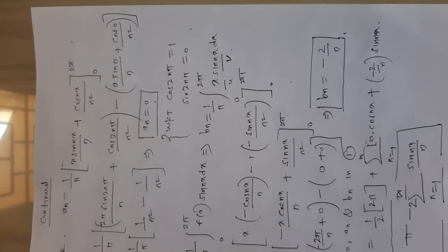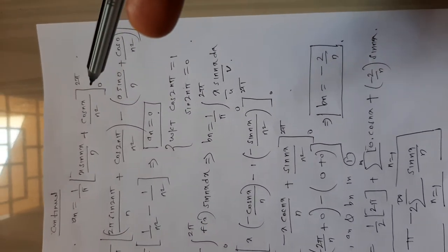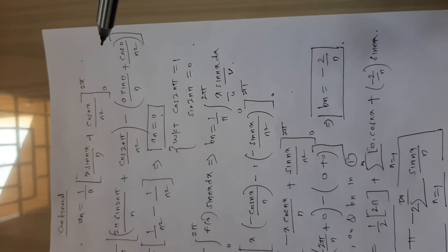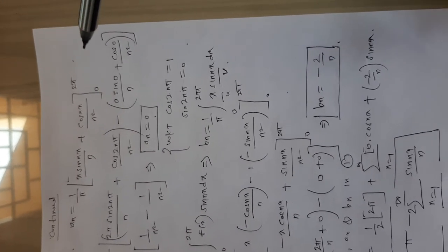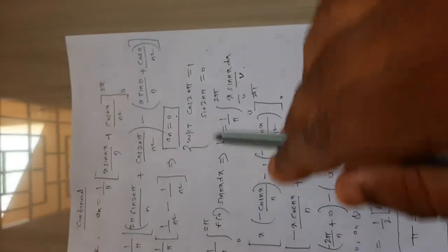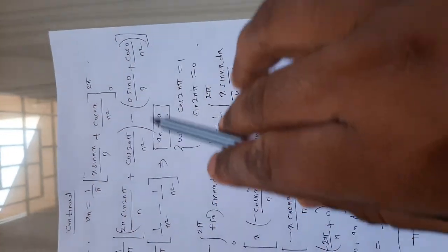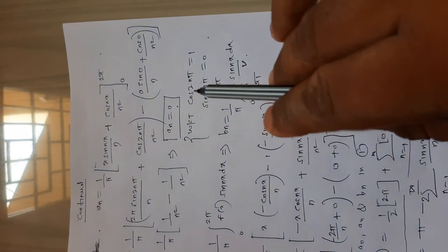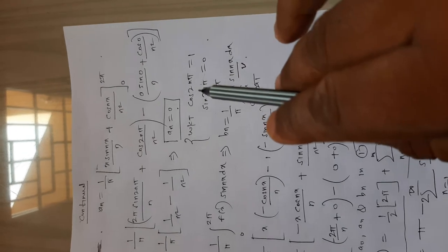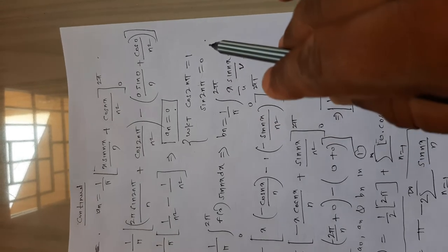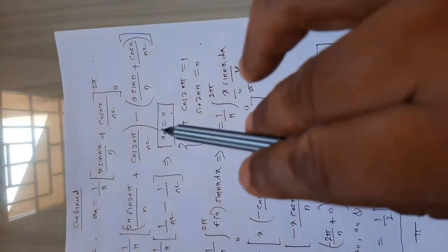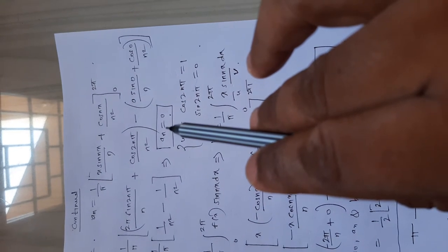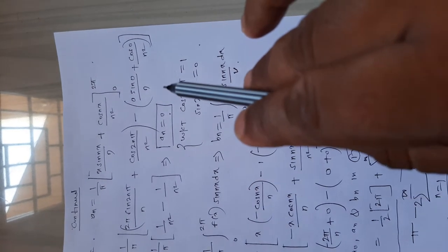We simplify: (1/π)·[x·sin(nx)/n + cos(nx)/n²] and put the limits. We know that cos(2nπ) = 1 and sin(2nπ) = 0. Substituting these values, we get an = 0.